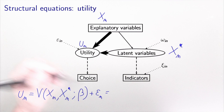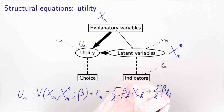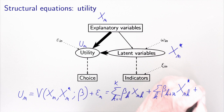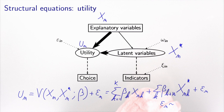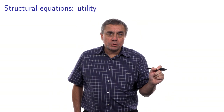A typical example would be a linear specification: first a term involving classical observed variables associated with coefficients — say k coefficients for the first part — then a second set of coefficients associated with the latent variables, and an error term. A typical assumption for the error term is that it is extreme value distributed with mean zero and scale parameter mu. The only difference from before is that now we have latent variables used as explanatory variables for the utility, although they are latent.